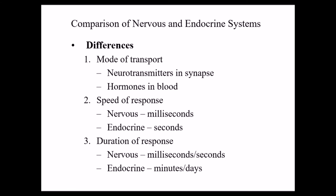There are also three major differences between these systems. Number one is how the chemical is transported — the mode of transport. For the nervous system, neurotransmitters like acetylcholine get secreted directly into a junction called a synapse. The endocrine system instead uses hormones that go directly into the bloodstream and travel throughout it. Number two is the speed of response. The nervous system is much faster, operating in milliseconds — you can think of it as a thousand times faster. Once a hormone is secreted, though, there's still a response within seconds.